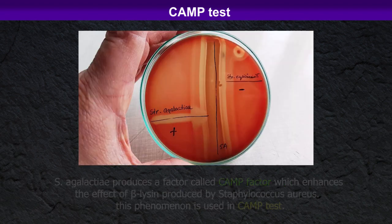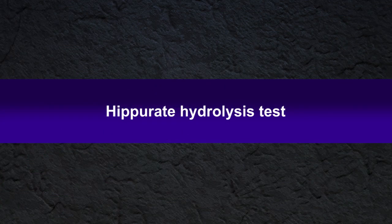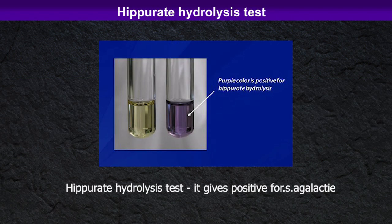Streptococcus agalactiae produces a factor called CAMP factor, which enhances the effect of beta-lysin produced by Staphylococcus aureus. This phenomenon is used in the CAMP test. We can also perform the hippurate hydrolysis test, which gives a positive result for Streptococcus agalactiae.